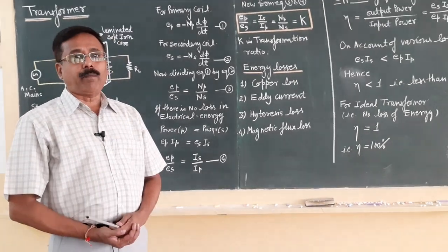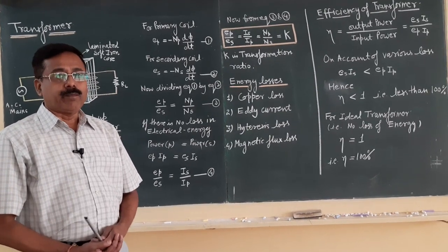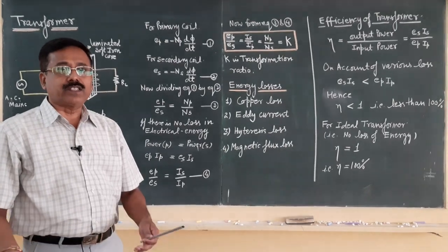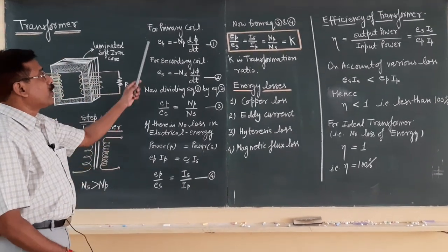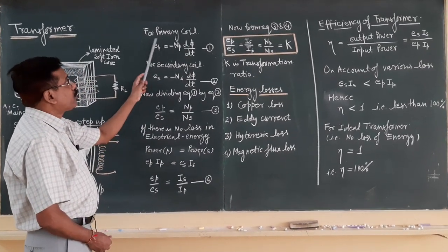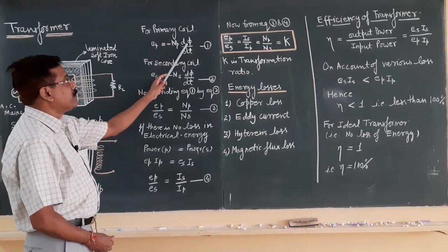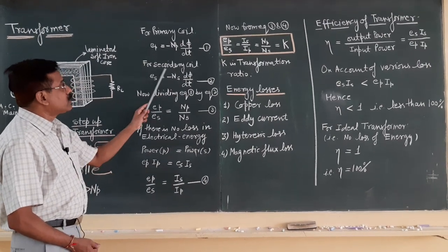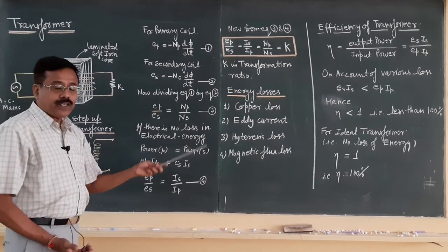Coming to the theoretical part for the relation between voltage, current, and number of turns — since the number of turns is the deciding factor for stepping up or stepping down the voltage — according to Faraday's law of electromagnetic induction, for the primary coil we have: Ep = −Np × dΦ/dt (equation 1). Similarly, for the secondary coil: Es = −Ns × dΦ/dt (equation 2).